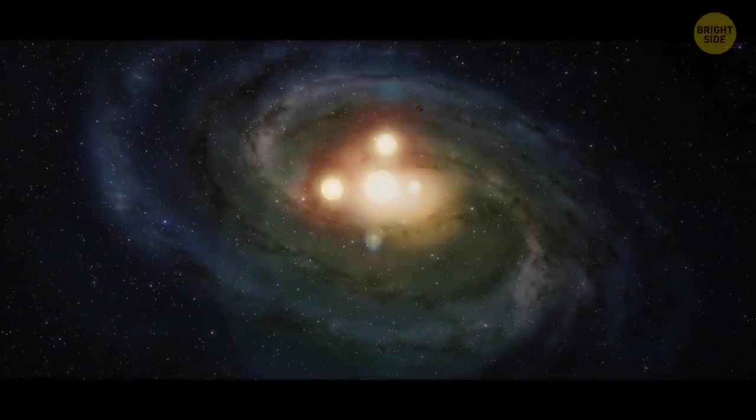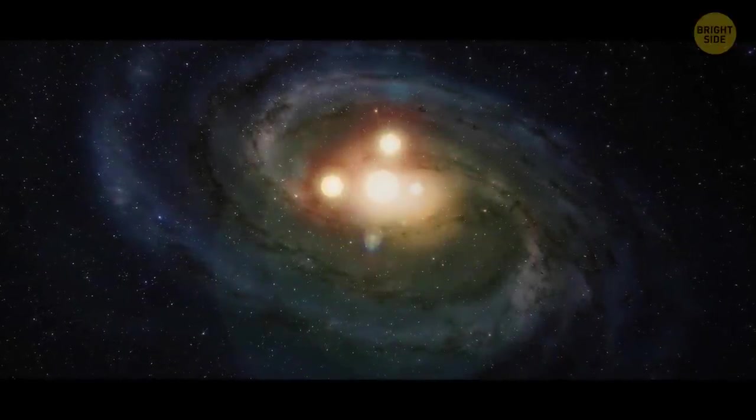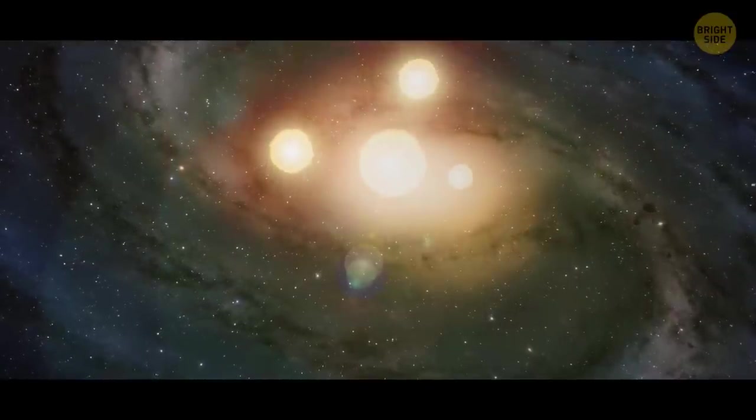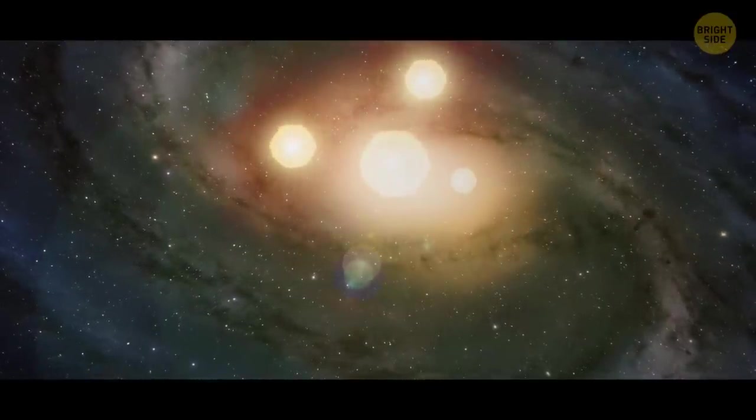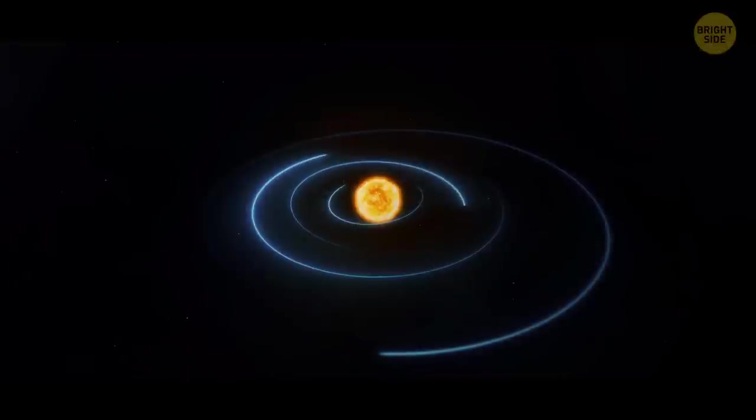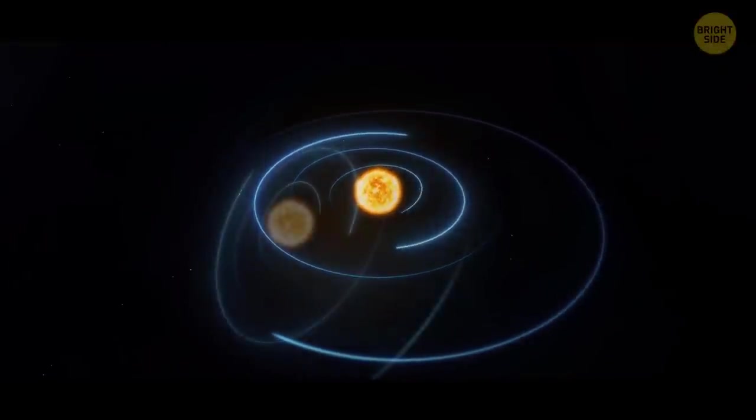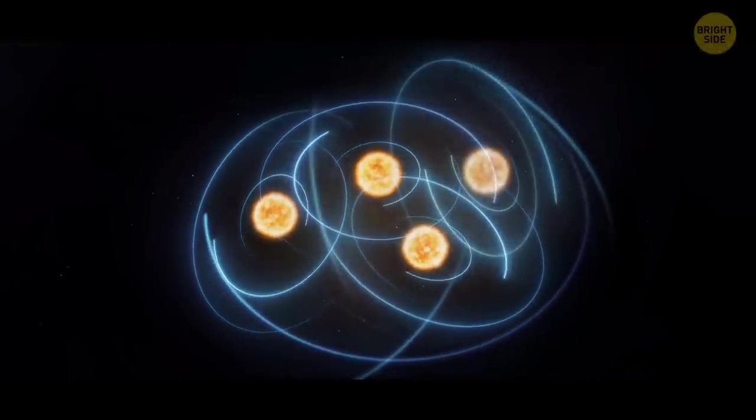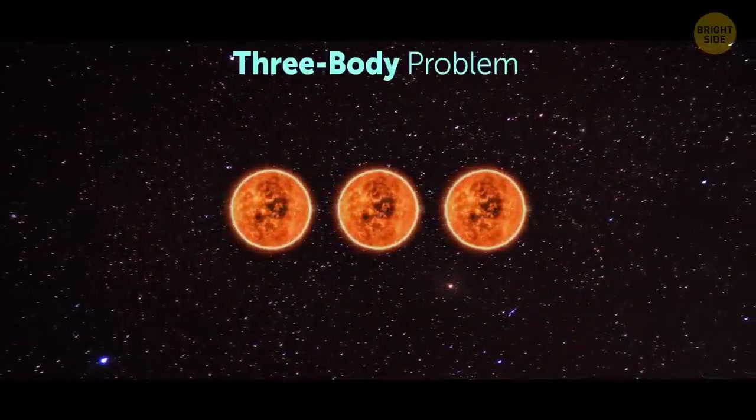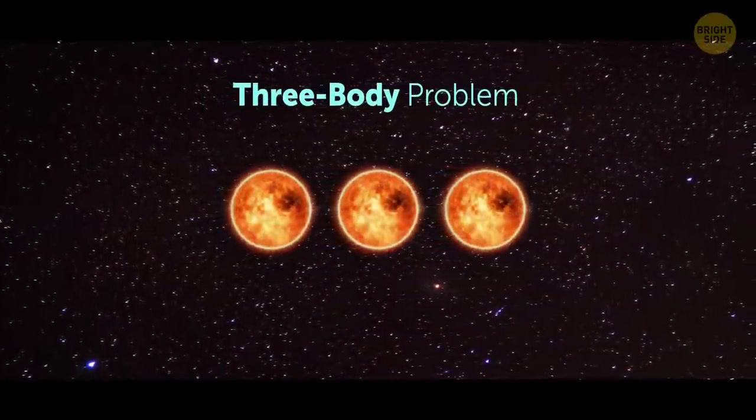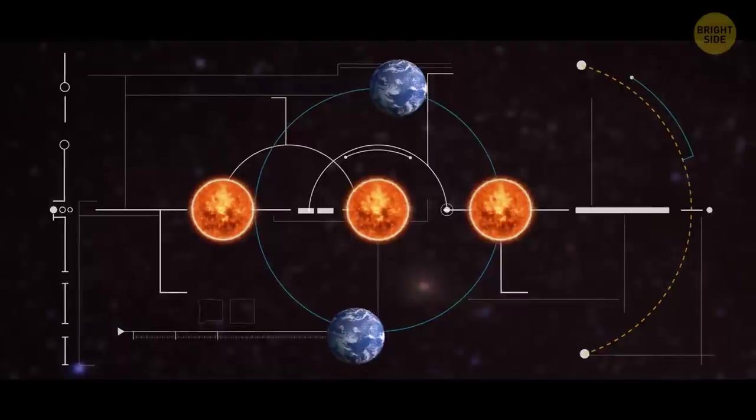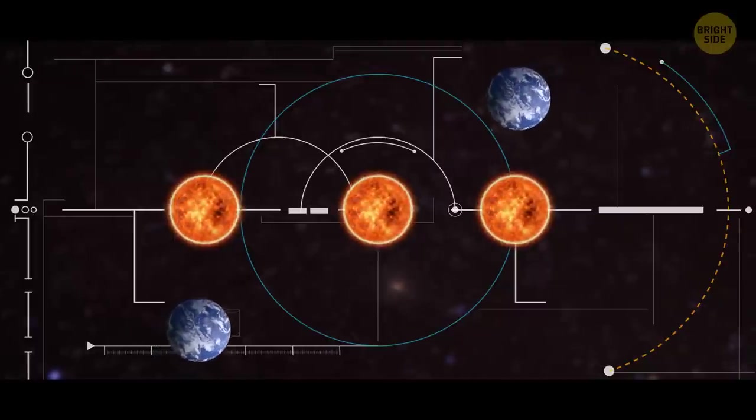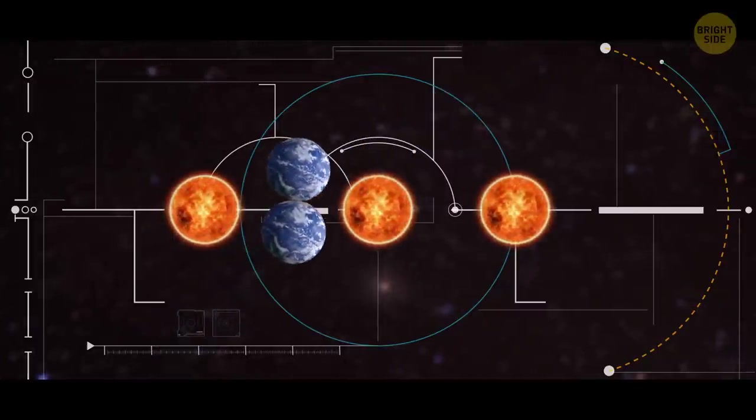But what about systems with four or even more stars? Is it even possible? Actually, yeah. But the more celestial bodies you add to the system, the more difficult it becomes. The orbits grow unstable. It's going to be as chaotic as can be. In stellar mechanics, it's called the three-body problem. It says that it's very difficult to predict the orbits of bodies in such systems. In most cases, they turn out to be very random and unique.